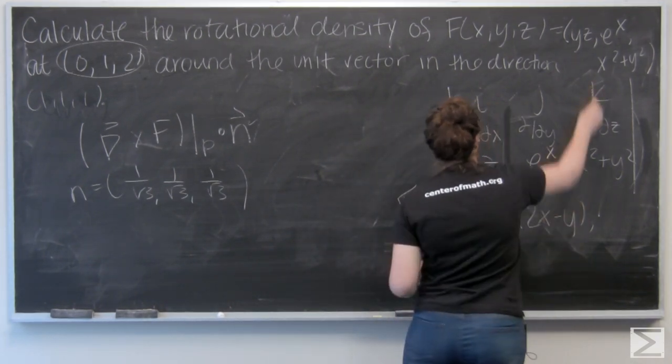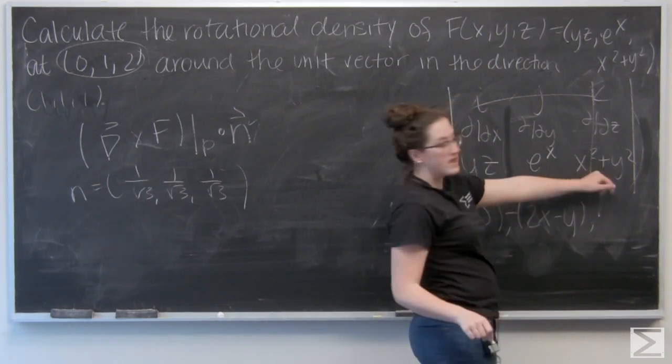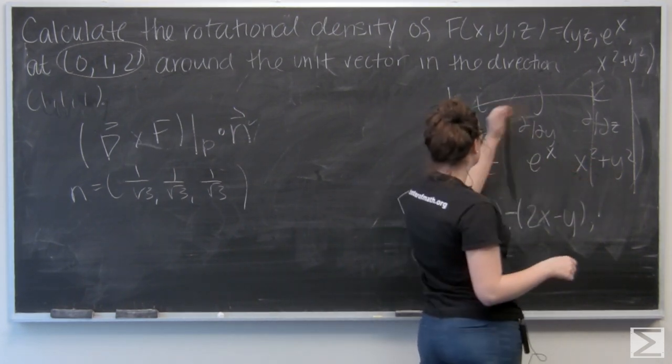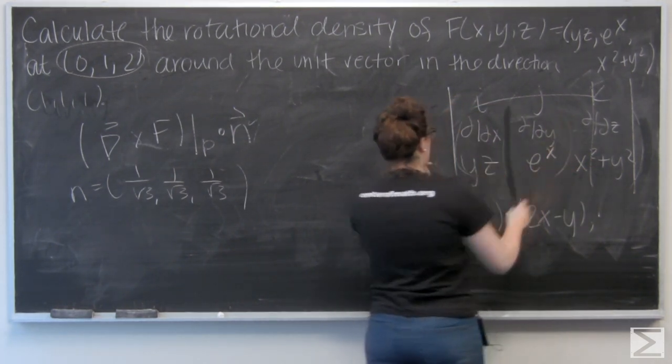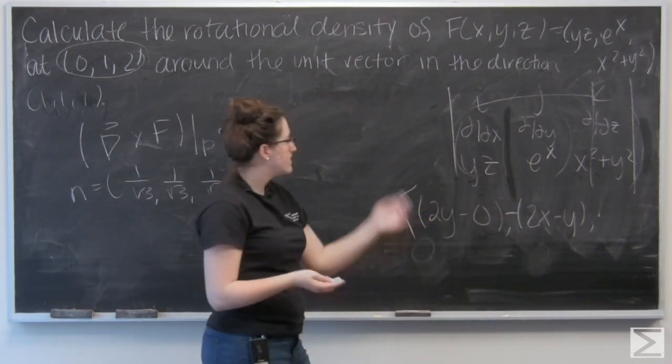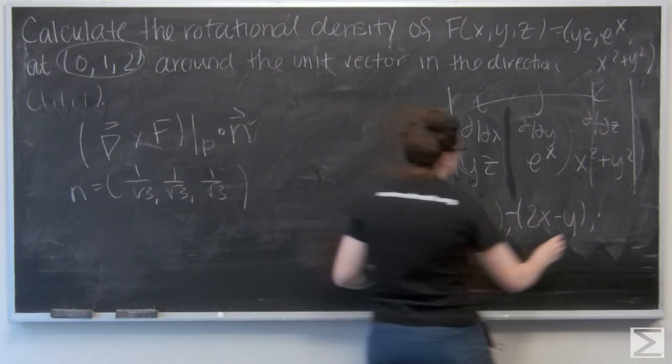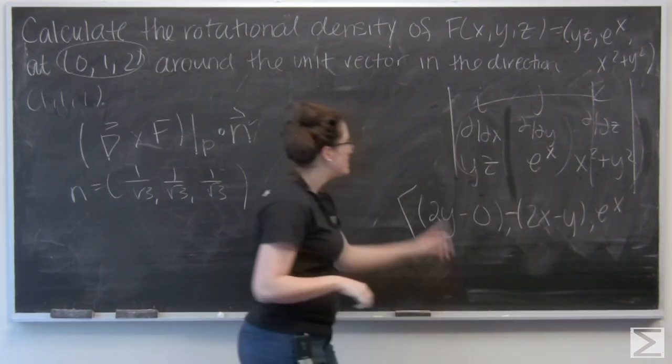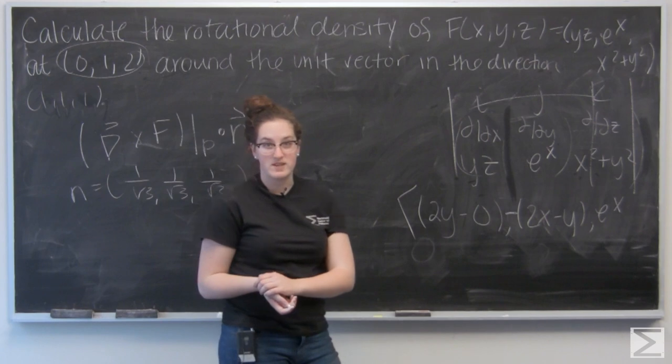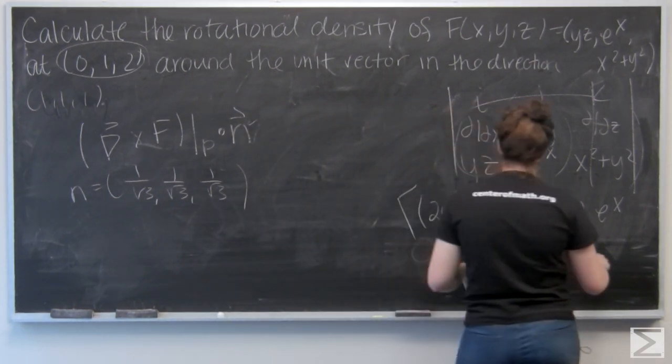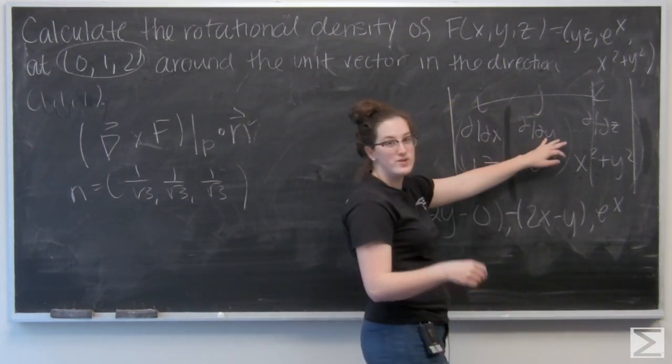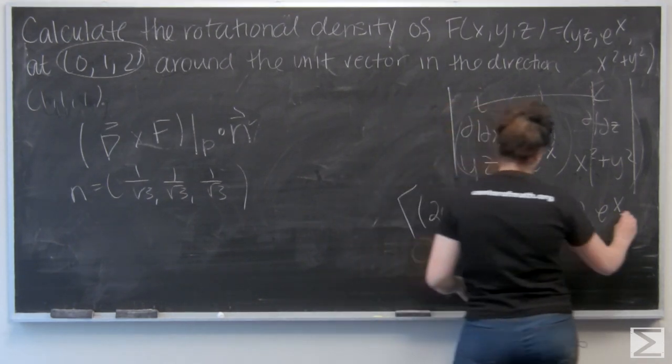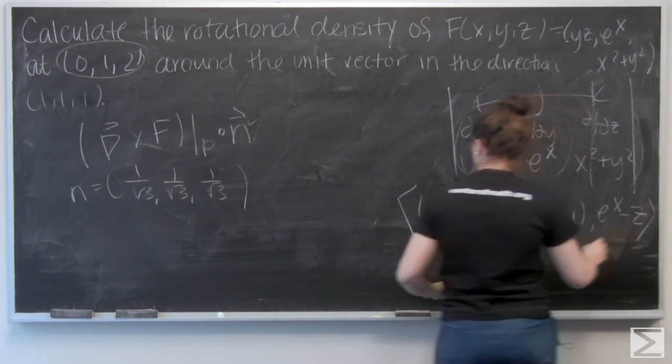And now let's do k. So this time I cut the rightmost column and the top row again. I have this 2 by 2 matrix. So I have the partial derivative of e to the x with respect to x, which is e to the x, subtract the partial derivative of yz with respect to z, which is going to be z.